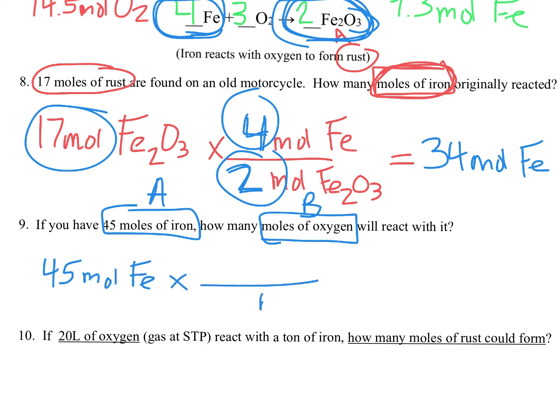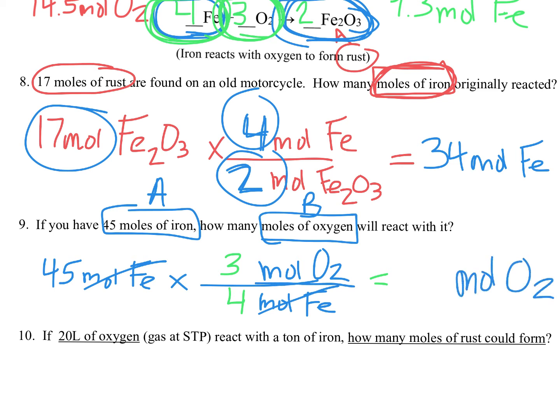We want to get rid of iron, so that means we're going to have to put moles of iron units on the bottom to cancel out. We're going to need to put oxygen up top, so moles of O2 is oxygen up top. And the only way we're going to figure out our numbers is to look on our balanced equation. For iron up top, it's 4 moles of iron for every 3 moles of oxygen. So that means if I double-check my work, moles of iron will cancel out.